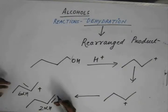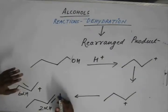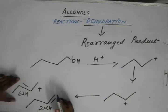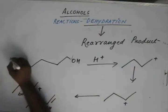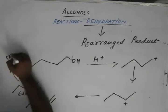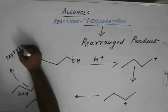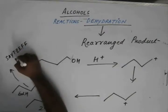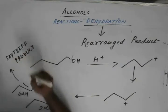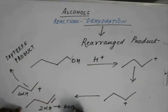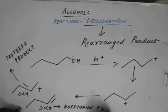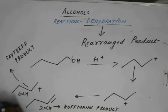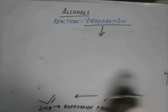The number of no-bond resonance structures of this alkene is more than that of this — 2-butene has more hyperconjugable structures than 1-butene. We know that if the number of canonical structures increases, the stability of the molecule increases. So this is the more stable product, known as the Saytzeff product, and this is the Hofmann product.